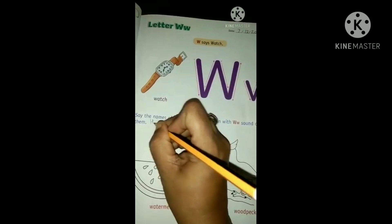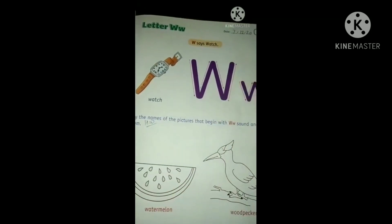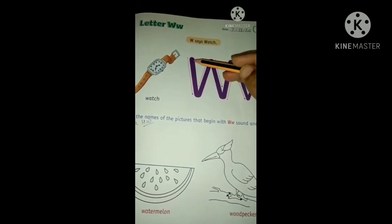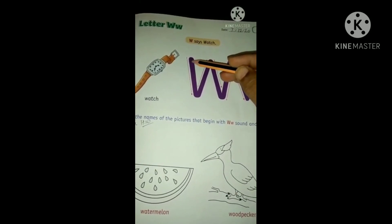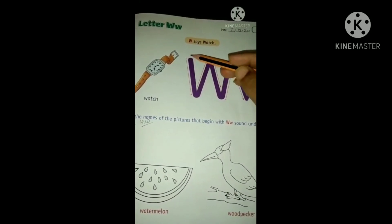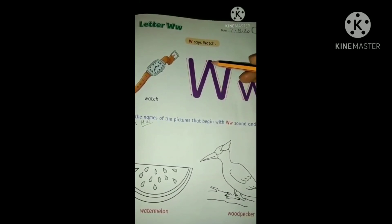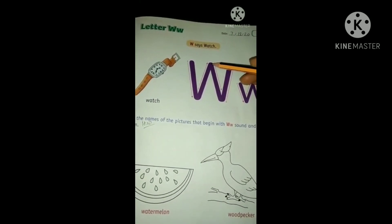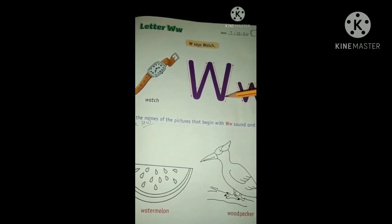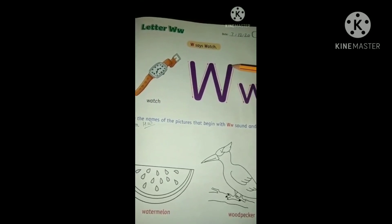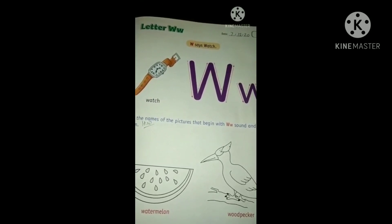Now we will learn how to trace and write letter W. See, we will draw a slanting line from upward to down. Then again go up like V. Again, write one more V. Done, W.